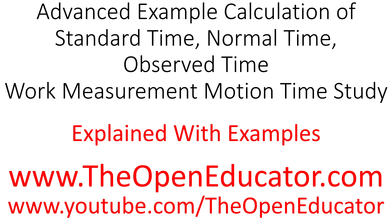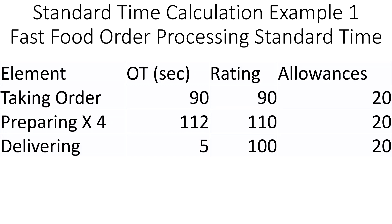We have seen how to calculate a standard time for one burger. What if we are interested to see how much time it takes if the customer orders four burgers at a time, or four orders at a time? For one order, the order-taking will take about the same time, and delivering will also take about the same time. The only thing that will change is the burger processing time. We'll assume for this problem that you can only make one burger at a time — unlike McDonald's, where they can make a bunch at a time.